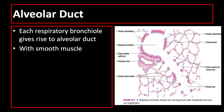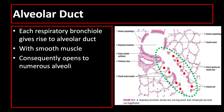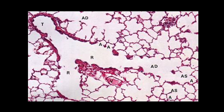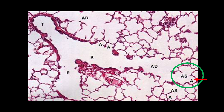The distal ends of respiratory bronchioles branch into tubes called alveolar ducts, which open into numerous alveoli. The alveoli are the terminal ends of alveolar ducts, described as sac-like evaginations. The terminal bronchiole branches to become respiratory bronchioles, which distally become alveolar ducts, eventually opening to alveolar sacs and alveoli.